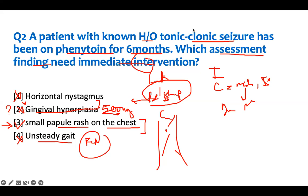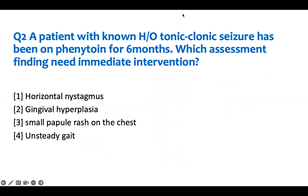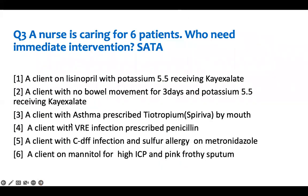Stay focused. Don't let any answer distract you. Know what you're looking for and go fish it out. Number three — we're back to SATA. We alternate: SATA, priority, SATA, priority. Select all that apply. Who needs immediate intervention? A nurse is caring for six patients who need immediate intervention.